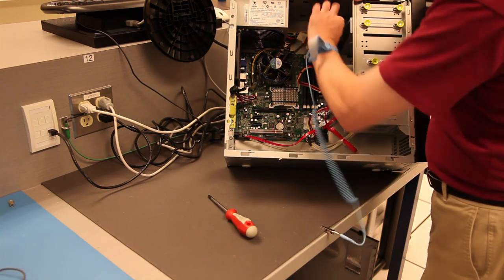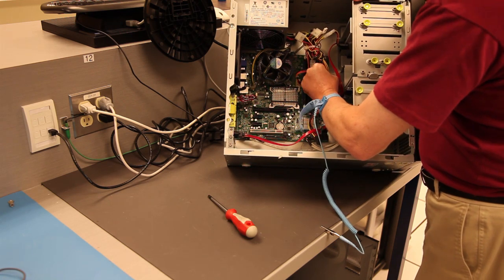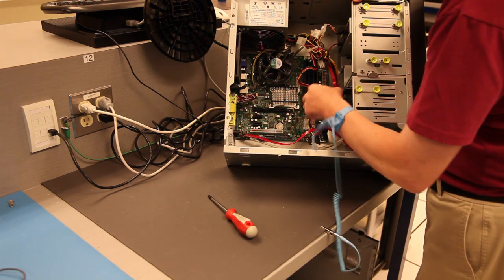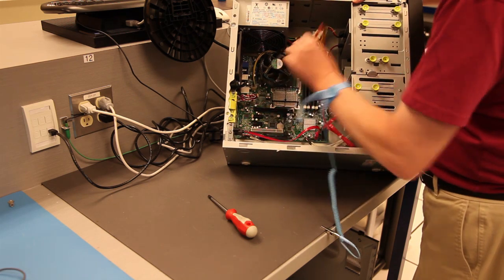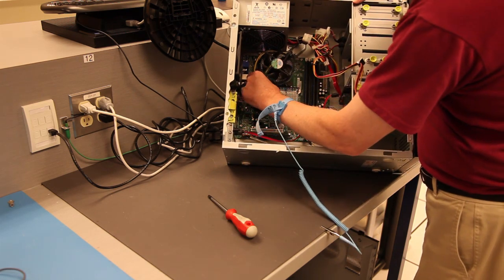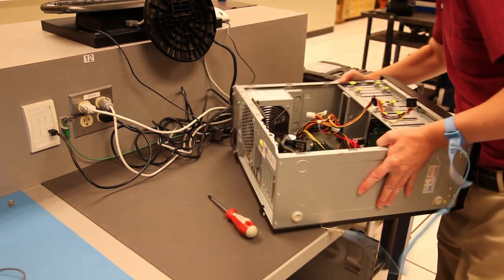Before removing the screws that hold the power supply in place, remember to remove all of the power cables coming from the power supply to any of the parts on the computer, like the optical disk drive, the hard drive, and the motherboard. If you're new to working on computers, make sure that you document where all of the cables were plugged in before you disconnect anything.